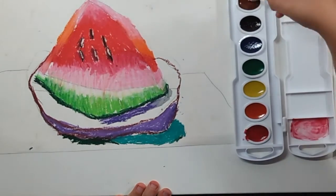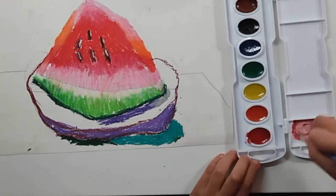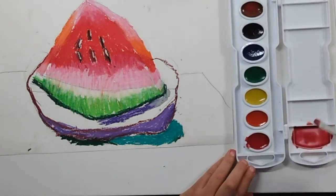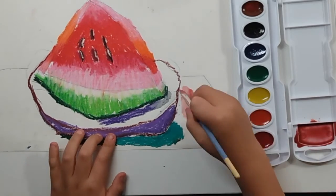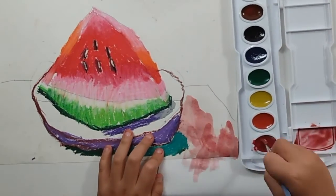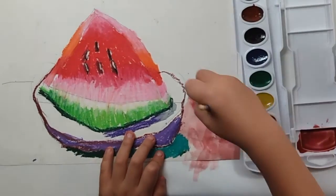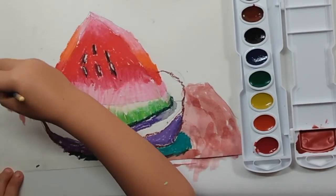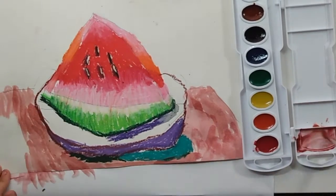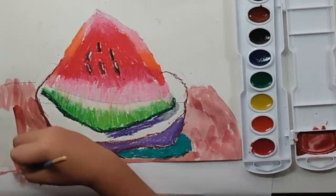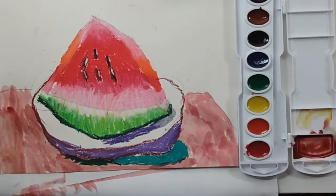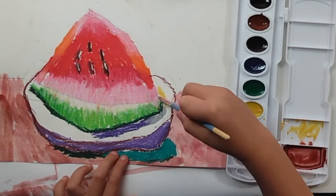Asher blends a red and brown watercolor to create a brick red color. All right, here we go. Booyah! Now he uses a yellow watercolor for the plate.